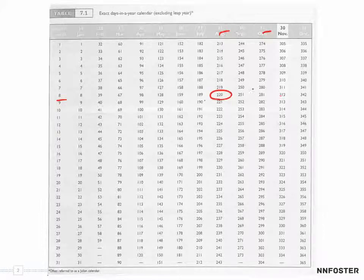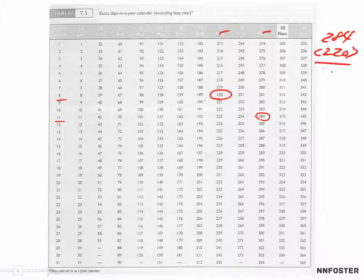October 11th is 284. So 284 less 220 is 64 days.